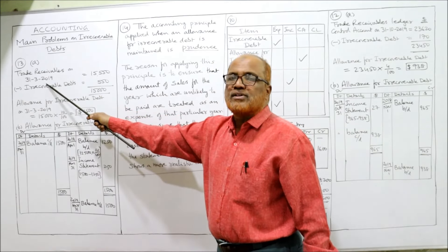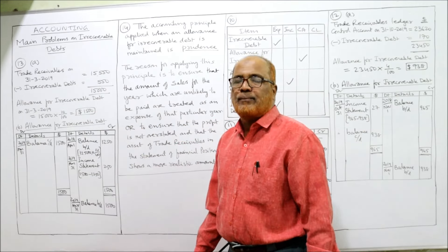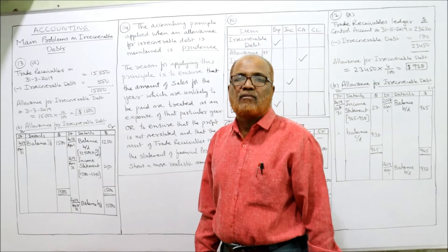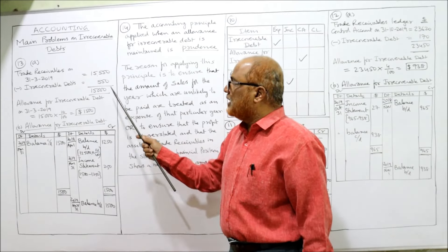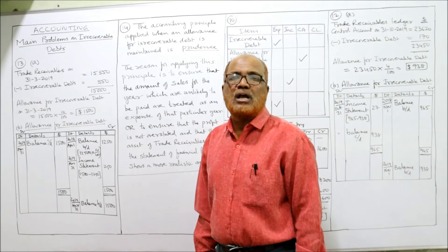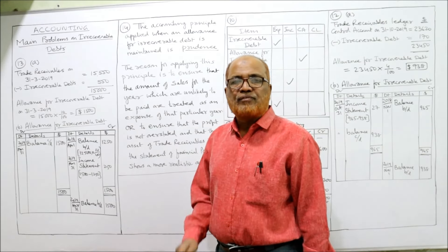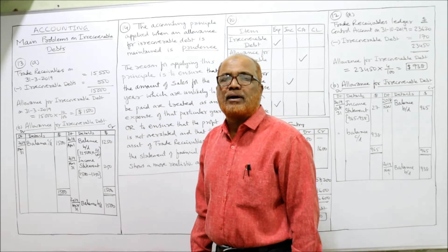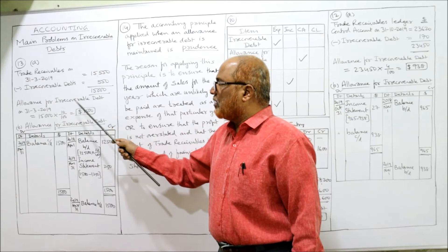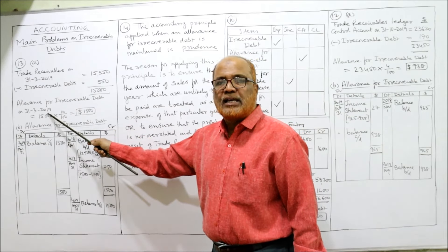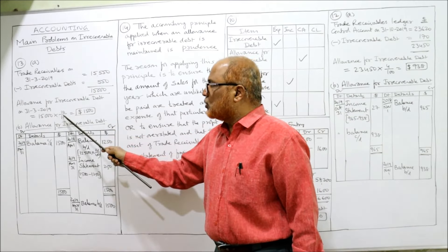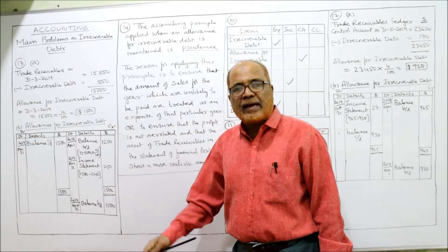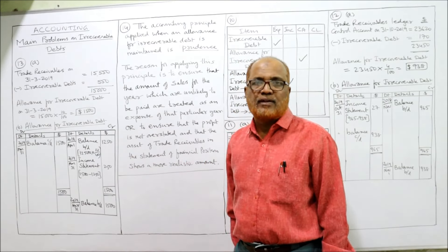Trade receivables on 31st March 2019 are $15,550. From trade receivables we first deduct the irrecoverable debt of $550, leaving $15,000. Now on this $15,000 we calculate the allowance for irrecoverable debt at 10%. So $15,000 × 10% = $1,500. That is the allowance for irrecoverable debt on 31st March 2019. Part one completed — we have calculated the closing allowance.